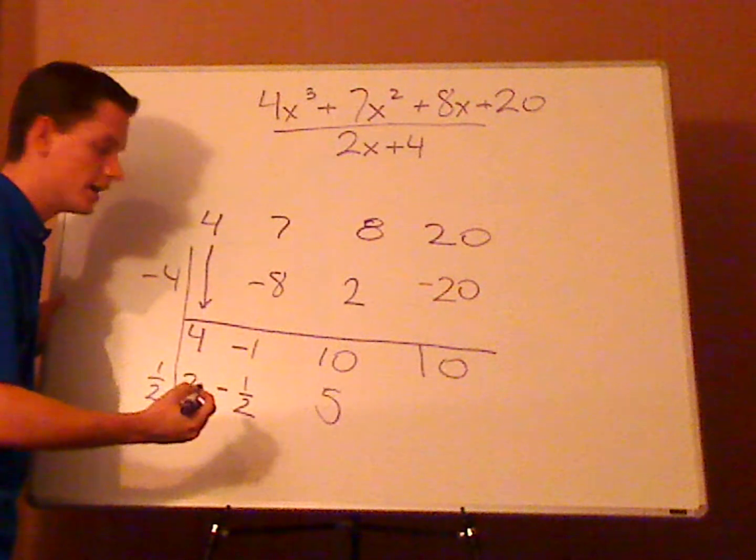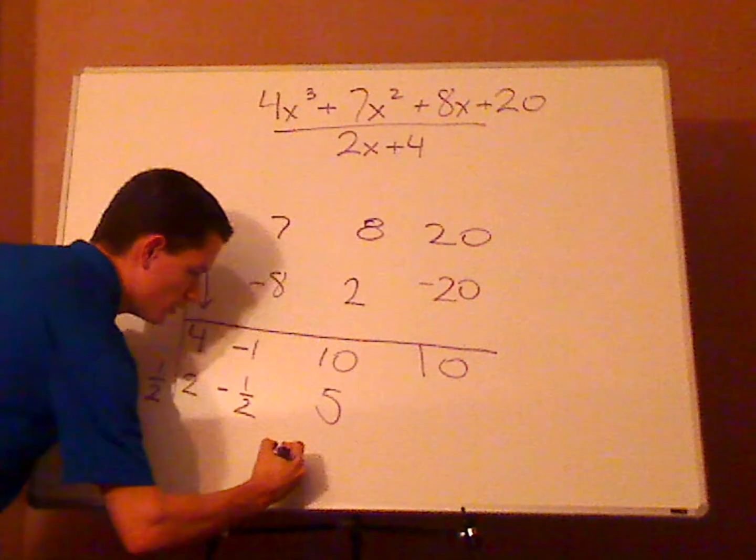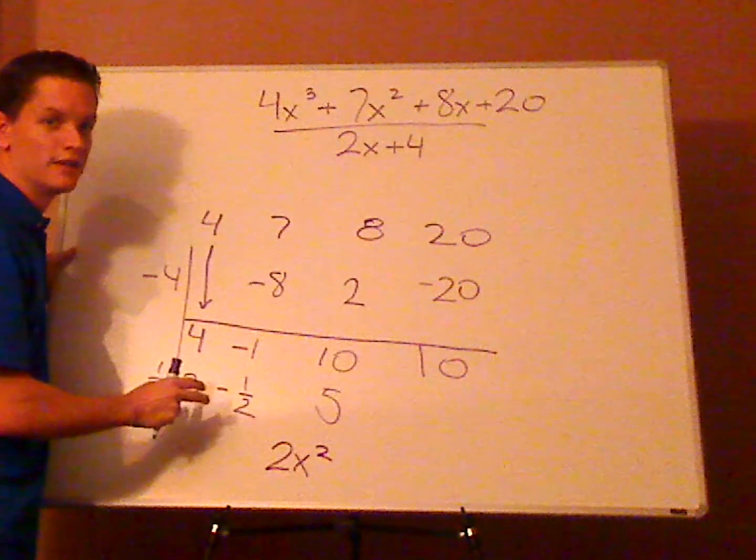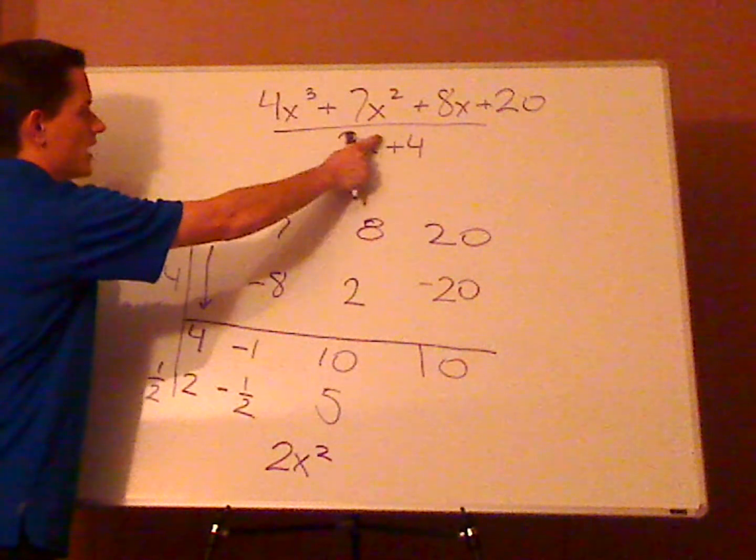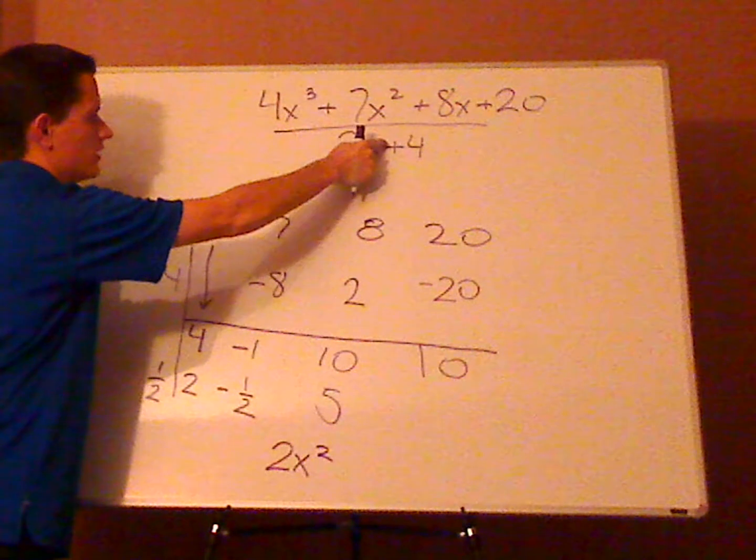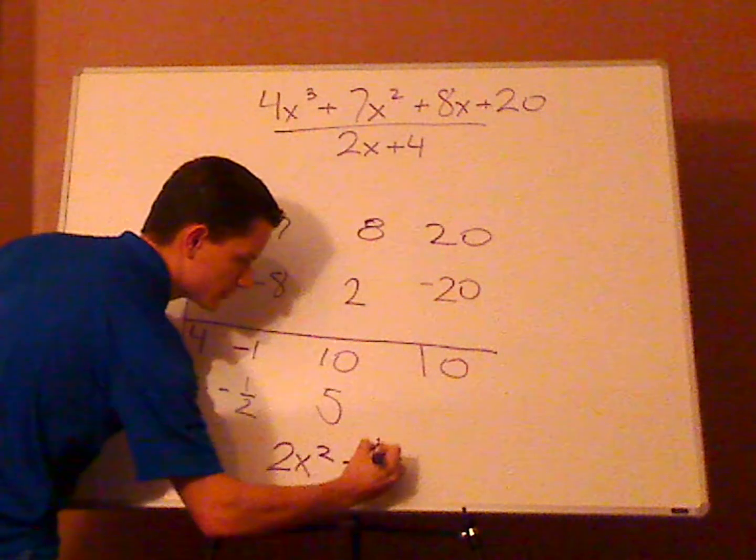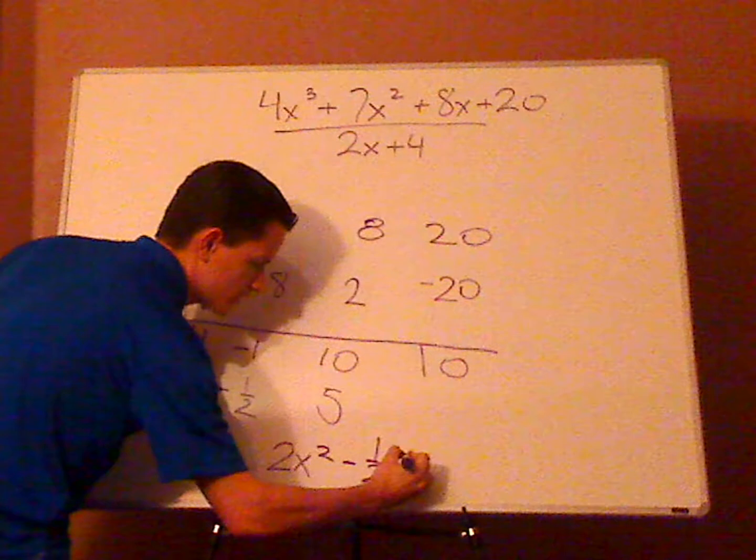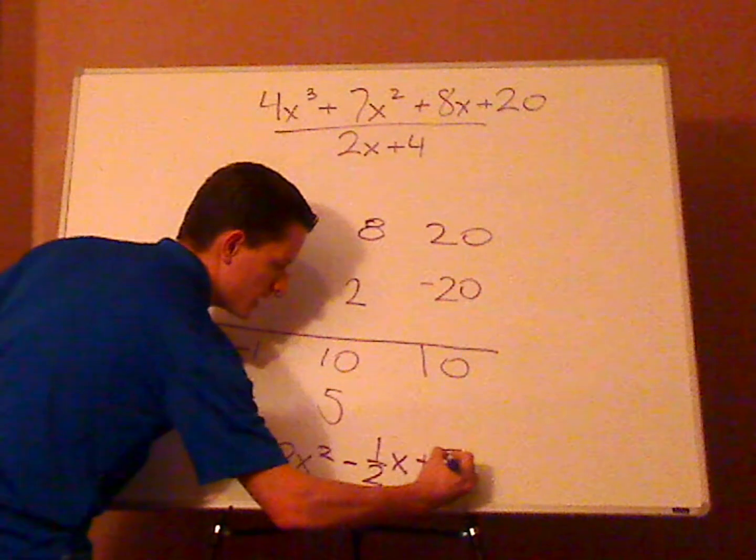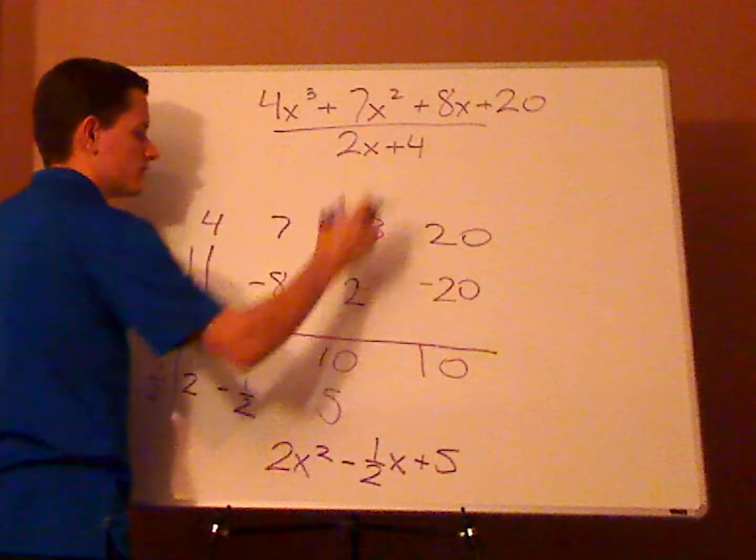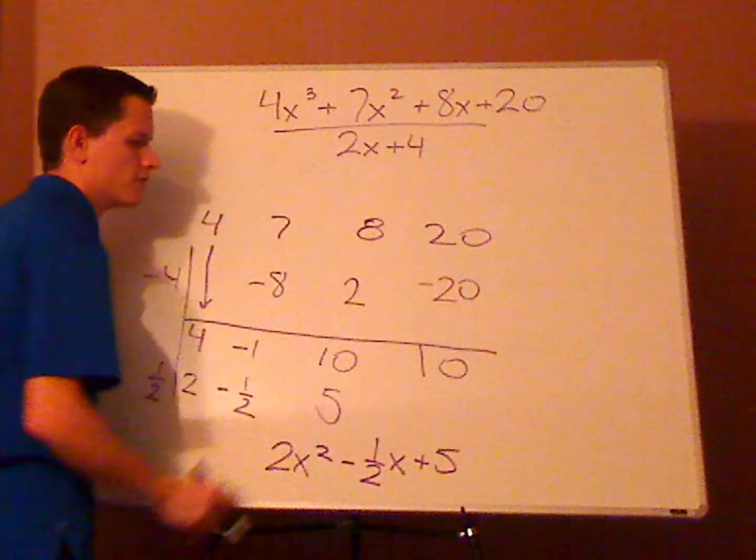So, your final answer would be this. 2x squared. Now, what we're going to do to find the degree is just subtract these. So, this is 3 minus 1, which would be 2. Minus 1 half x plus 5. And there is no remainder. If there was a remainder, you would just simply add and put it over a divisor.